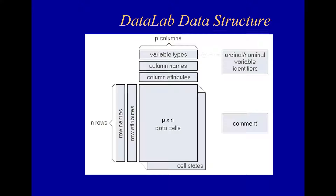In addition to the central data matrix, there are several auxiliary matrices holding, for example, the row and column names, the row and column attributes, and the variable types. Finally, there is a text container which can be used to put a comment on the data set.